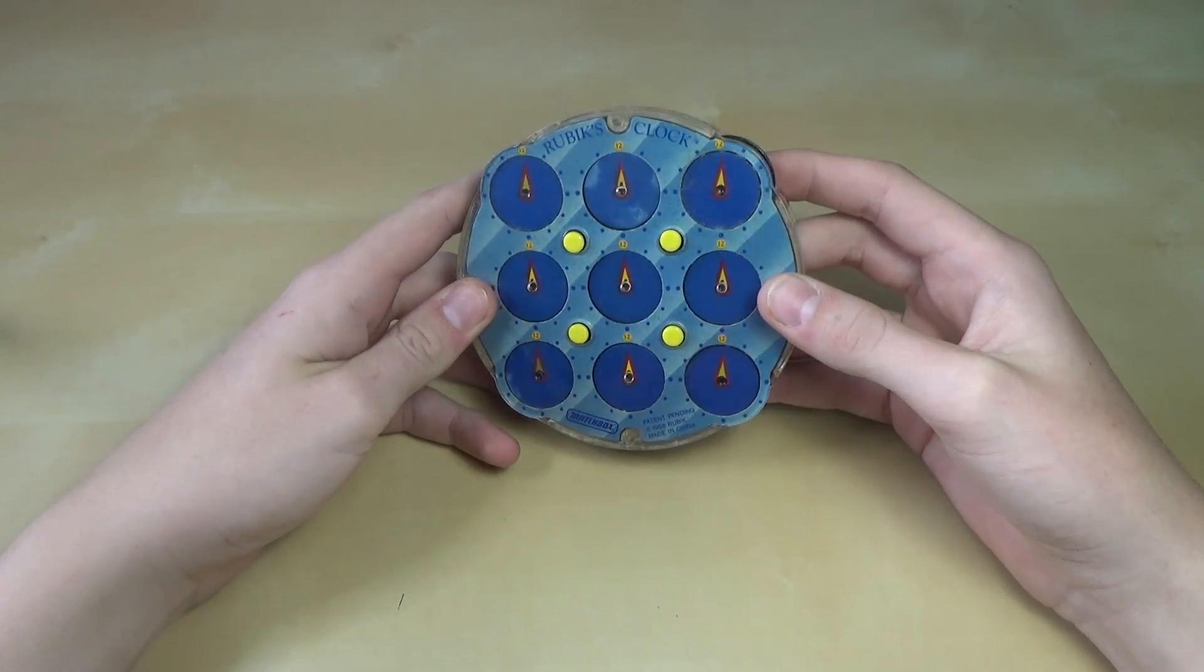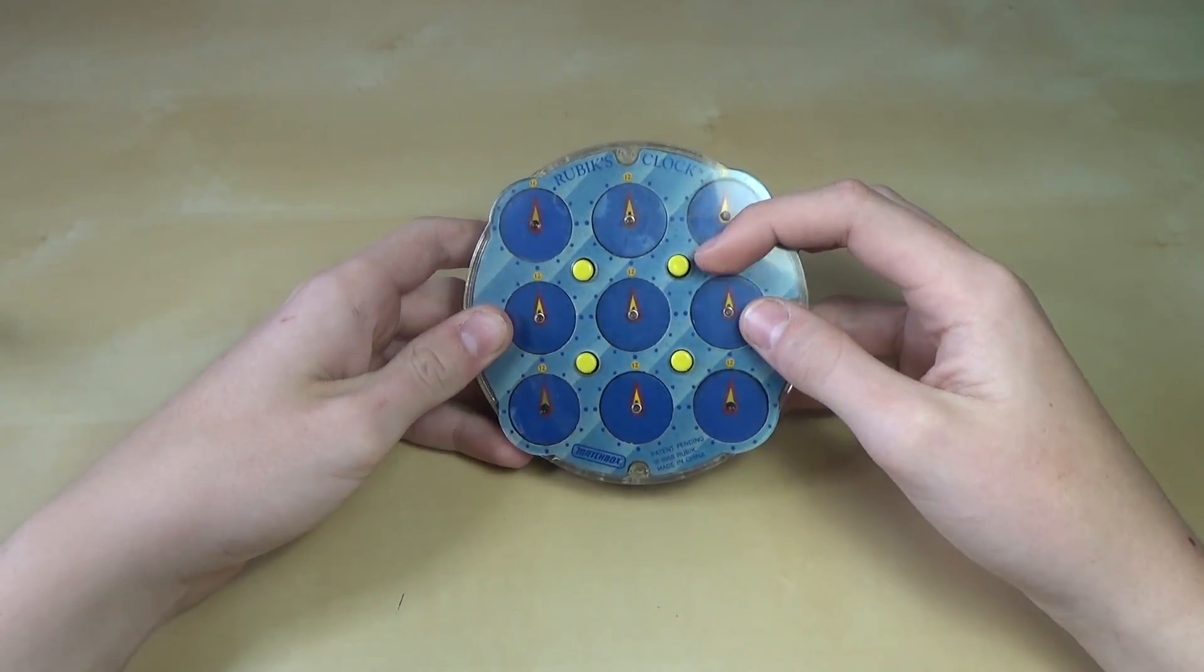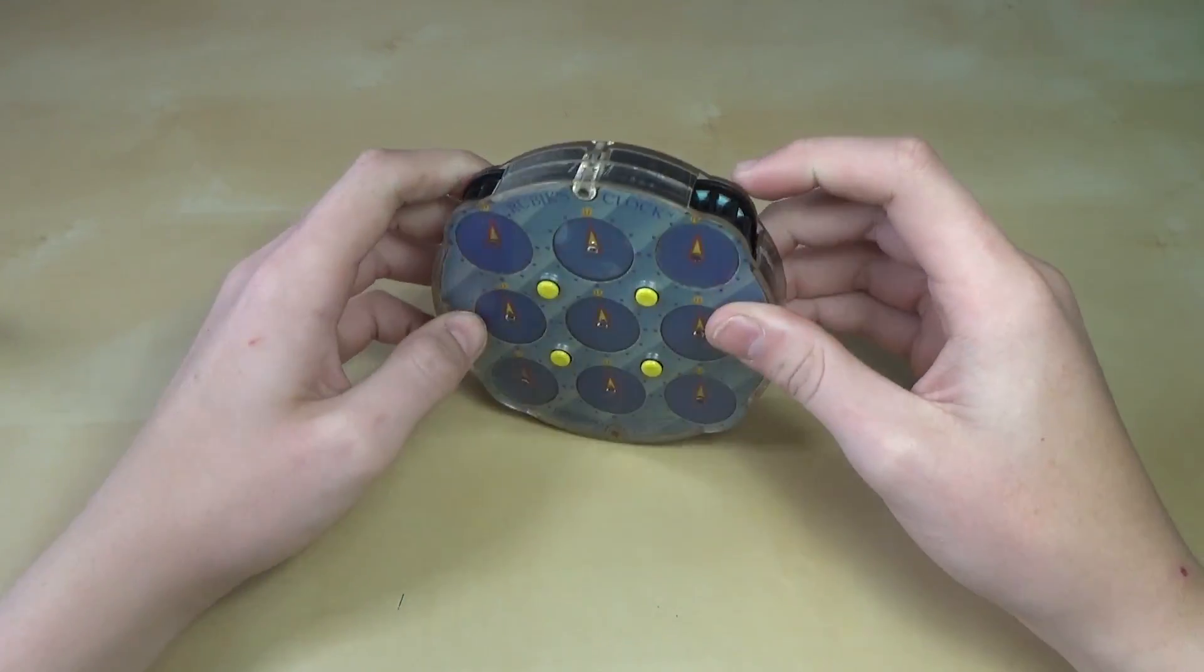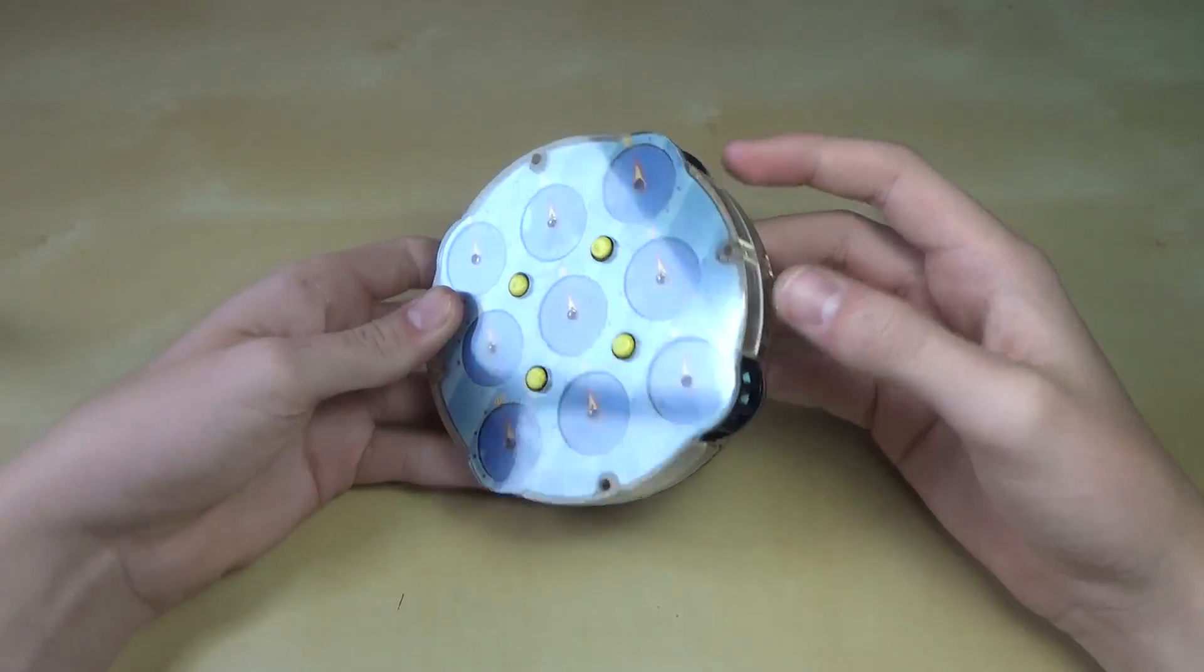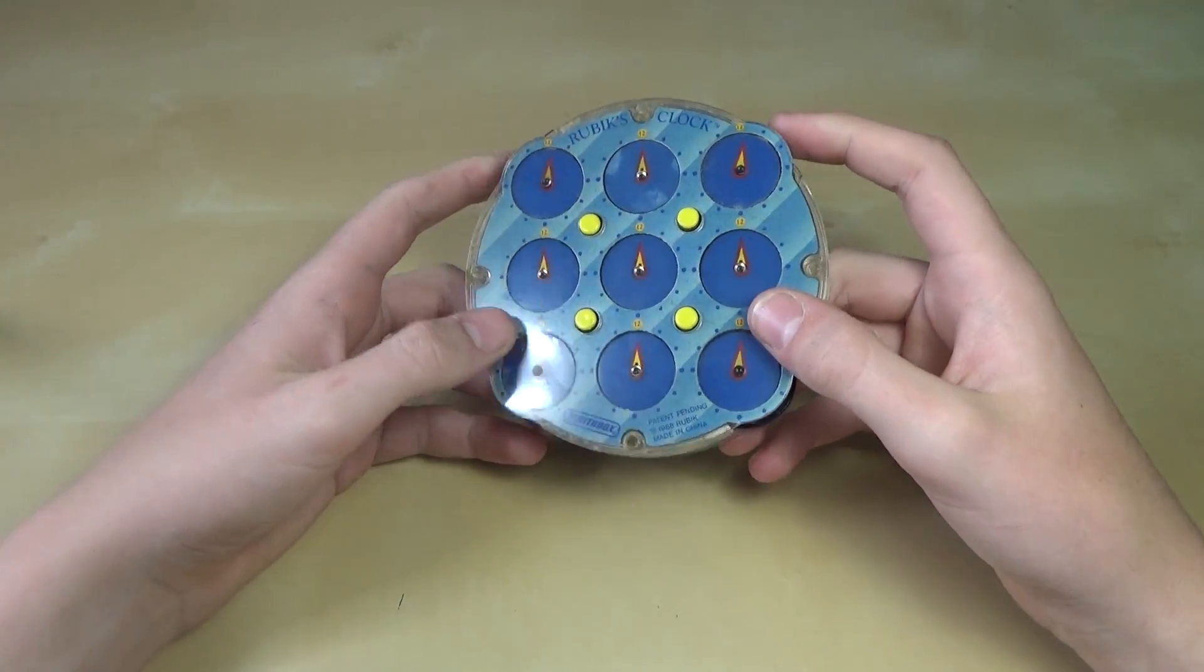And the reason that the other side is already solved, even though we didn't match up the corners separately for this one, is because the corners, again, are two-sided. And so when you move one corner, it moves on the other corner. And it just matches up at the end.